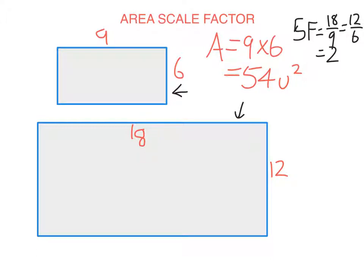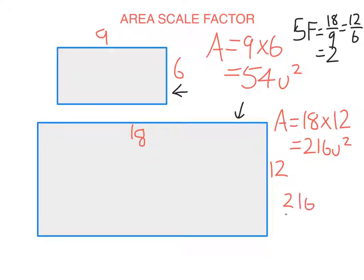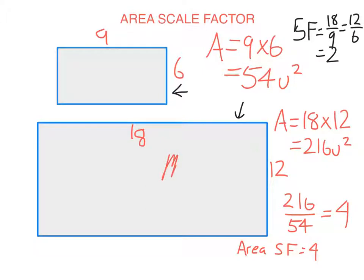But if I look at the area of the larger rectangle, will it also double? Well, the area is now 18 times 12, which gives 216. Now, 216 divided by 54 isn't 2 — it's actually 4. So I have doubled the length of each side of the rectangle, but the area has multiplied by 4. And this is what we call the area scale factor — the area scale factor is 4. That means to get the big rectangle, I multiply the area of the smaller rectangle by 4.